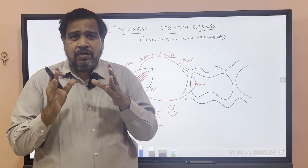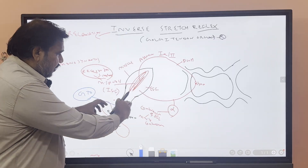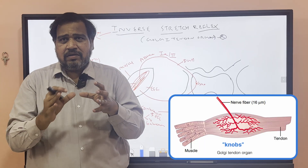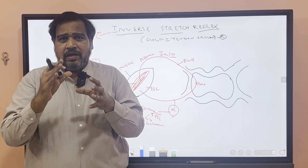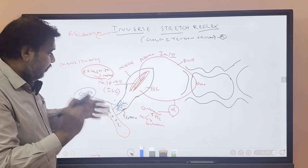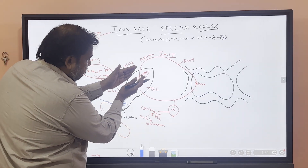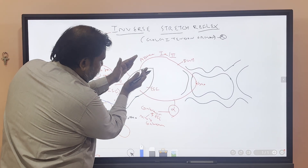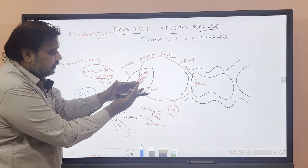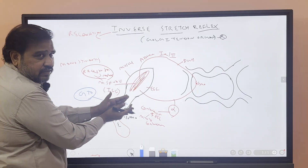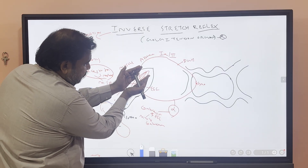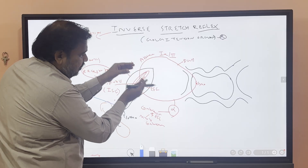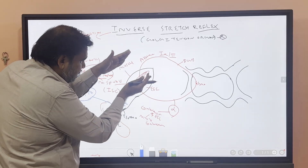Golgi tendon organs are formed like knobs — K-N-O-B-S, knobby. Another very important point: the intrafusal fibers and extrafusal fibers are parallel to each other. The red color is intrafusal fiber and the outer one is extrafusal fiber. They are both parallel to each other.